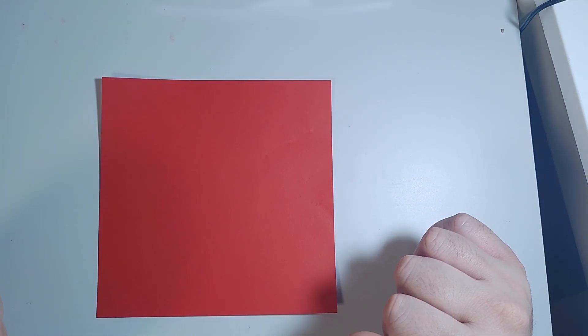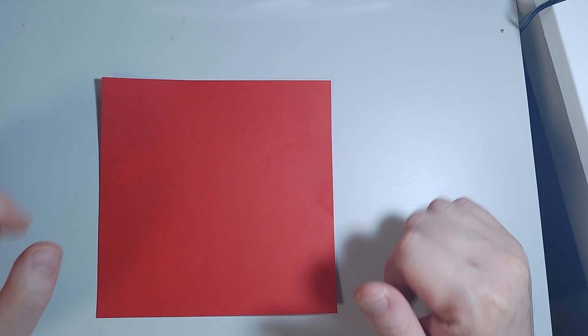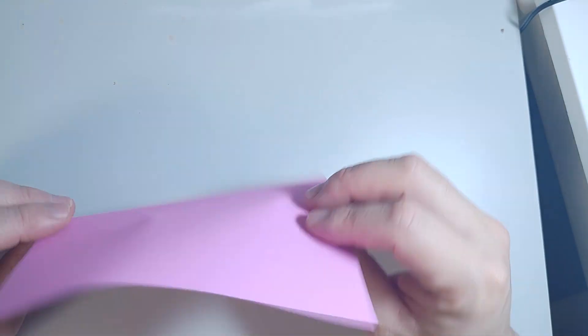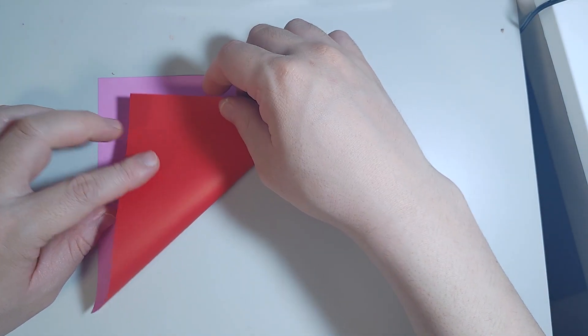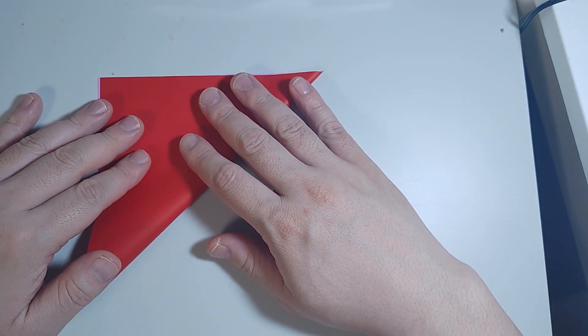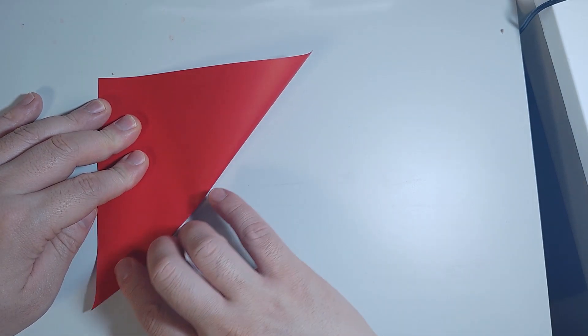Today we'll fold a very cute and easy girl's face. Place it with the hair color facing down, then fold it in half to make a triangle and unfold.